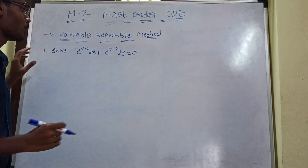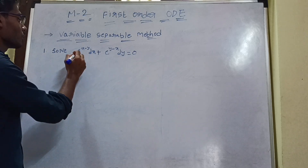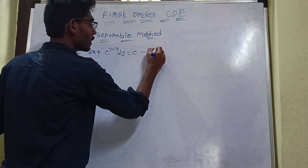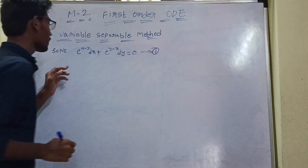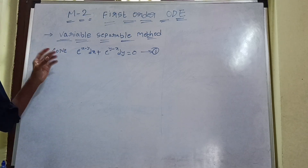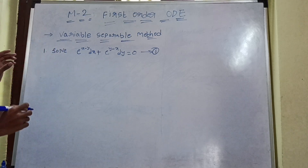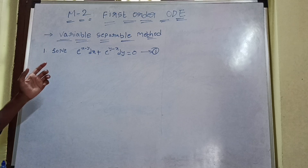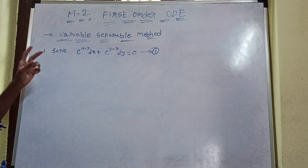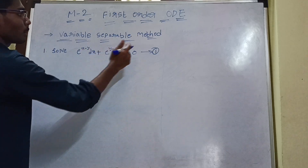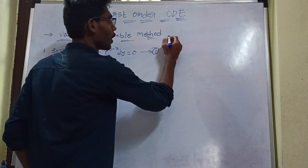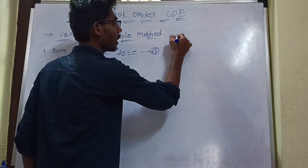There are several differential equation methods: linear, Bernoulli's, exact, and others. So identification is very important. For this question, we identify the correct method. We check the form — variable separable method form — and confirm which method applies.